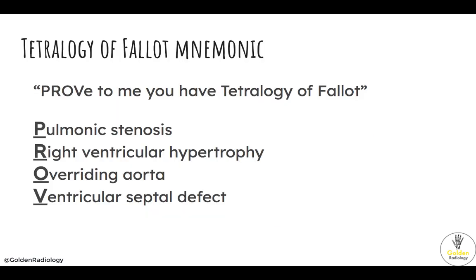Here is a mnemonic to help you remember Tetralogy of Fallot: PROV — 'Proof to me you have Tetralogy of Fallot.' P for pulmonic stenosis, R for right ventricular hypertrophy, O for overriding aorta, and V for ventricular septal defect.